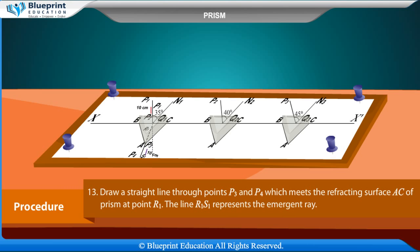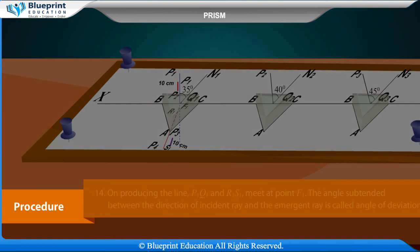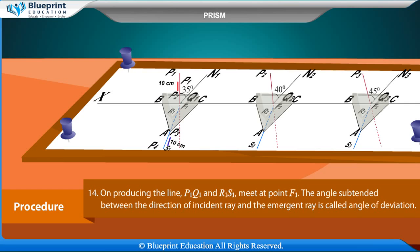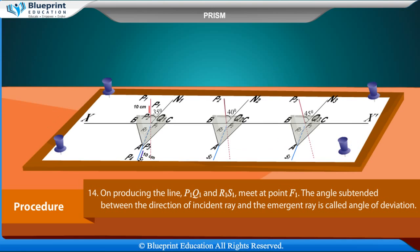Remove the pins and encircle their pricks on the paper. Draw a straight line through points P3 and P4 which meets the refractive surface AC of the prism at point R1. The line R1S1 represents the emergent ray. On producing the line P1Q1 and R1S1, they meet at point F1. The angle subtended between the direction of the incident ray and the emergent ray is called the angle of deviation.